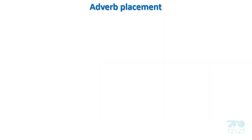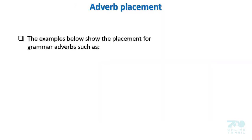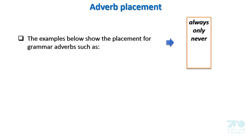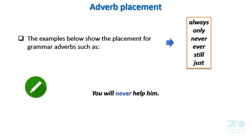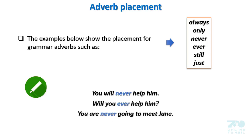Adverb placement. The examples below show the placement for grammar adverbs such as always, only, never, ever, still, just, etc. Examples: 'You will never help him.' 'Will you ever help him?' 'You are never going to meet Jane.' 'Are you ever going to meet Jane?'